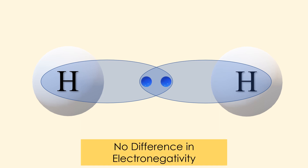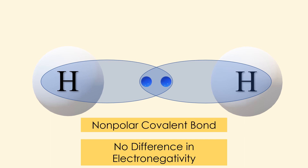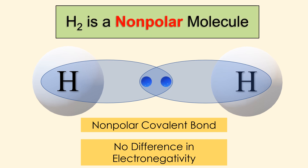Because both atoms are hydrogen, there is no difference in electronegativity. Thus, there is no attraction of the electrons towards either atom. The bond is said to be a nonpolar covalent bond. And since there is only one bond, we can conclude that H2 is a nonpolar molecule.